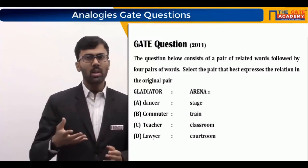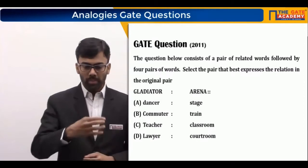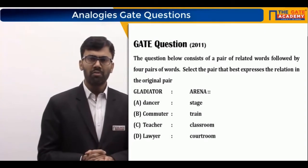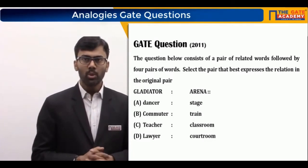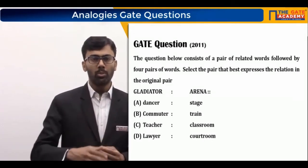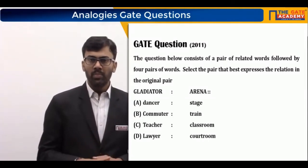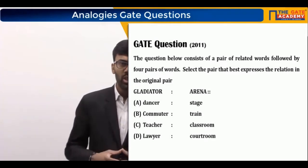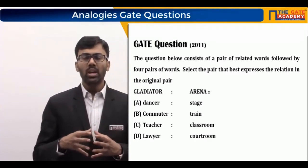Looking at option A: a dancer performs on a stage. A dancer is almost always expected to perform on a stage, so option A appears correct. Option B is 'commuter : train.' A commuter is someone who travels from one place to another, but commuting can be done by bus, car, or train — not necessarily a train alone. So commuter and train are not related in the same way as gladiator and arena.